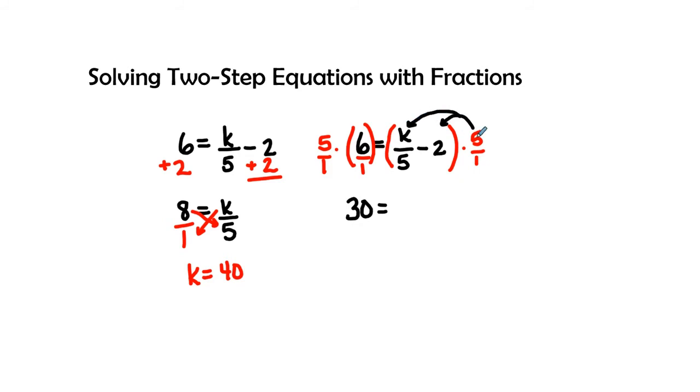If I use distributive property to each term inside the parentheses I have 5 times k is 5k, and 5k divided by 5 I'll just go ahead and write it as a fraction so we can see. And then 5 times a negative 2, because I always want to include the sign in front of the term, gives me a negative 10.